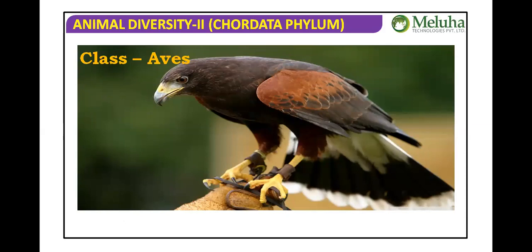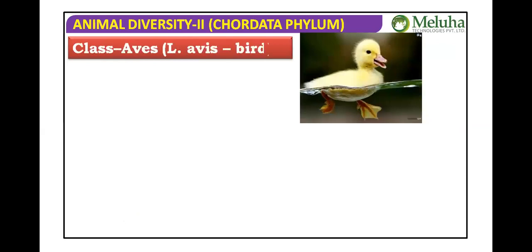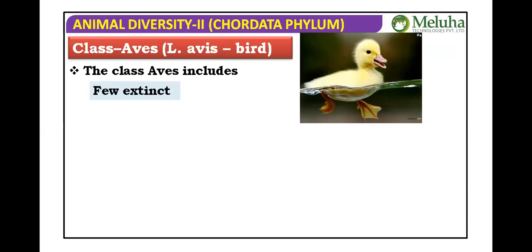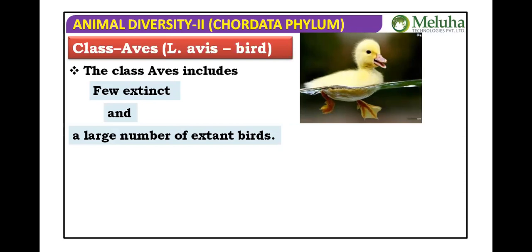In Class Aves, 'Avis' means bird. The class includes a few extinct and a large number of extant birds. Extinct refers to species that lived millions of years ago and are completely gone, while extant means those living at present. So a few extinct and a large number of extant birds are present.